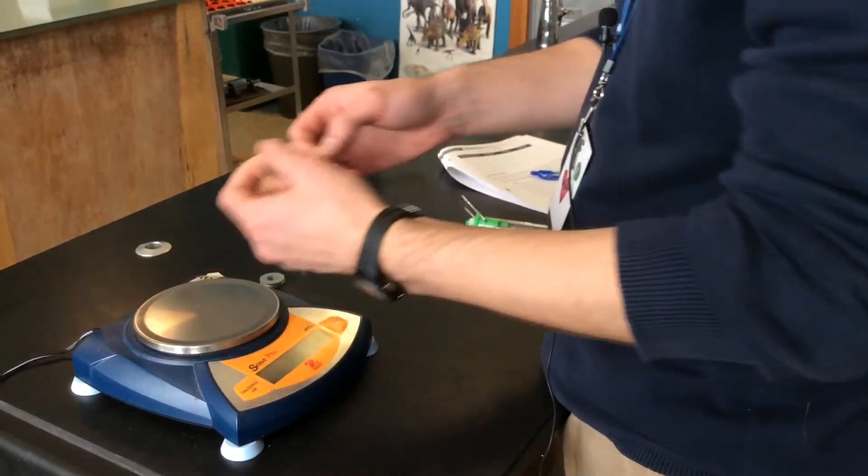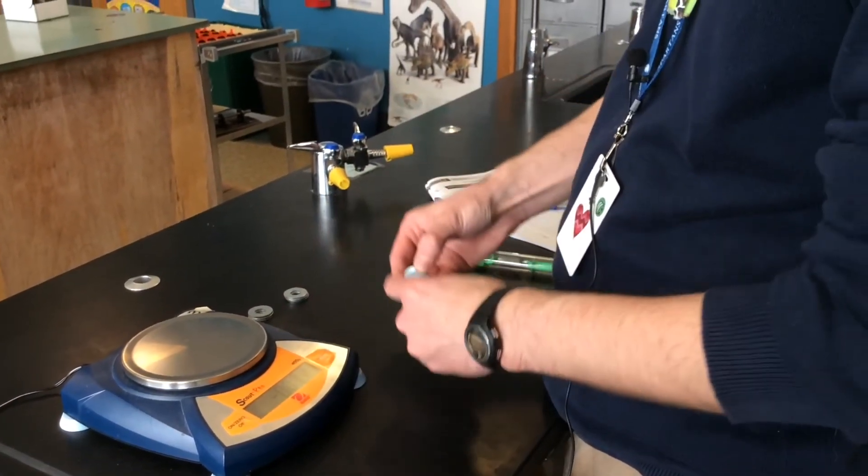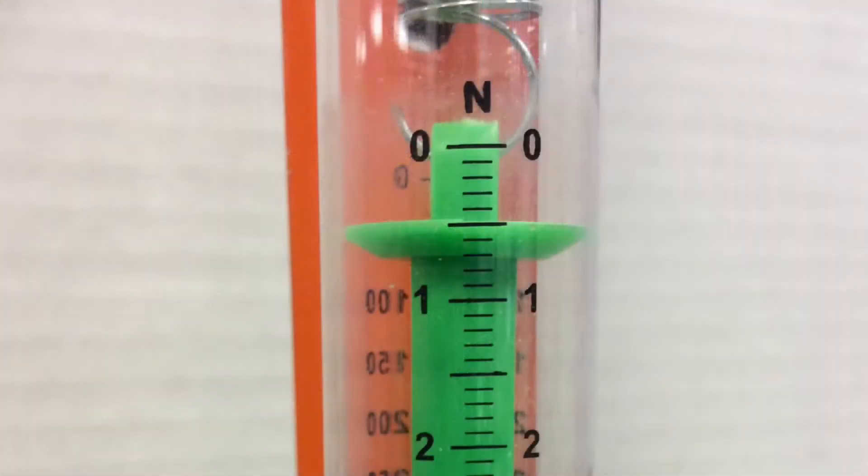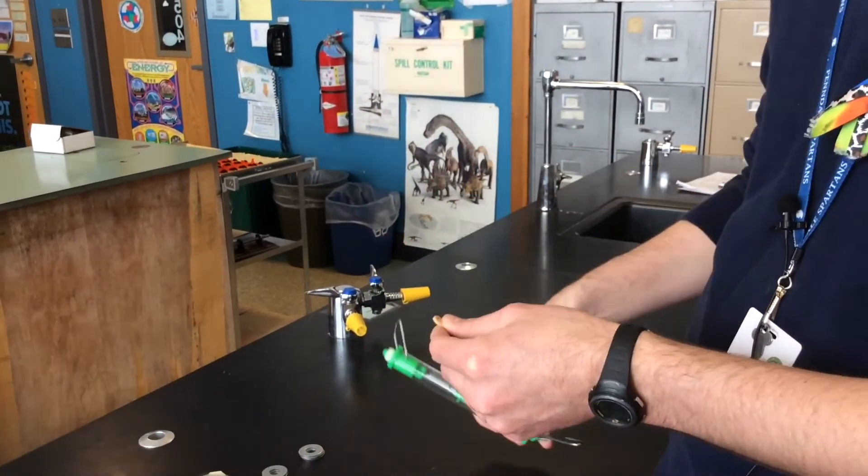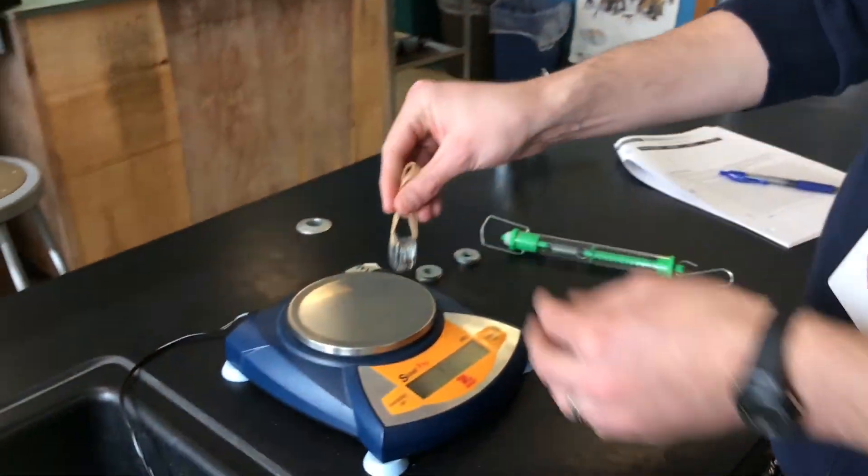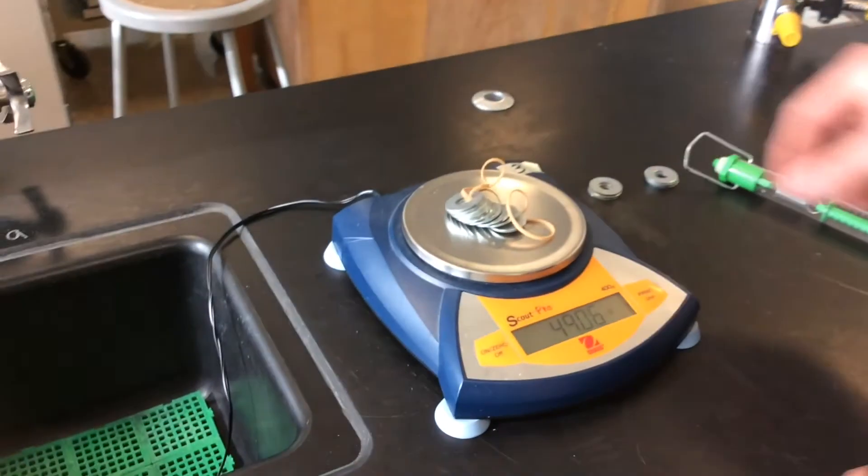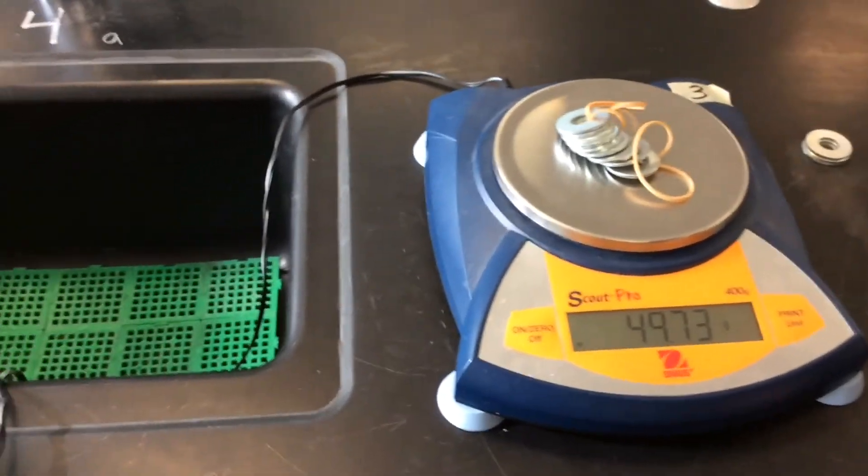Our third data point will be nine washers. Nine washers stretches the spring scale a little bit further. More mass gives us more weight. Record that on your data table for nine washers, weight in newtons. And here is the mass of nine washers in grams.